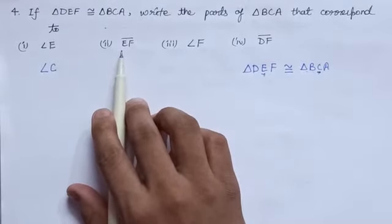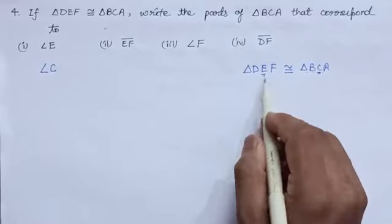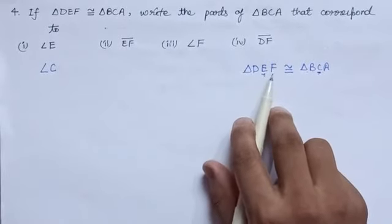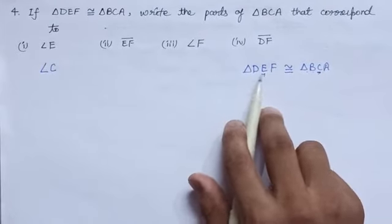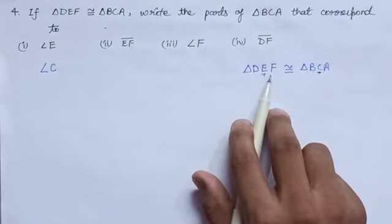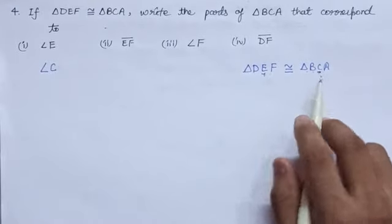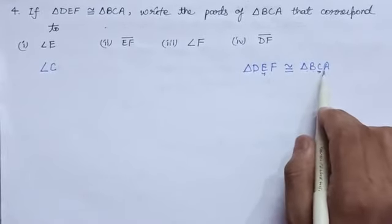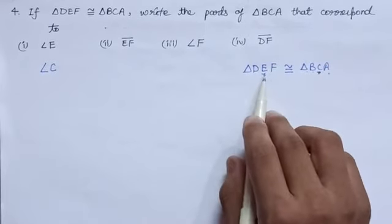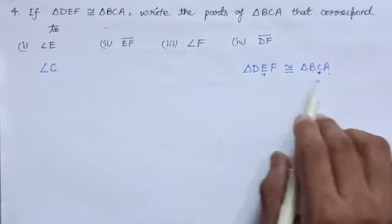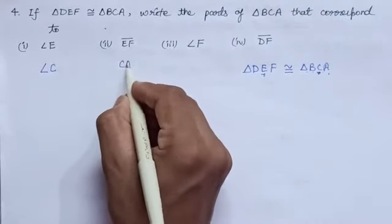Now let us see the next: line segment EF. In triangle DEF, line segment EF is formed by the last two letters. So let us see the last two letters of triangle BCA. The last two letters of triangle BCA are CA. Hence, line segment EF corresponds to line segment CA. Our answer is CA.